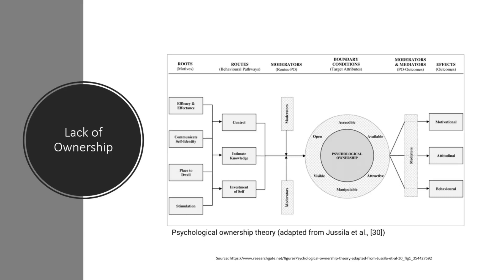The psychological principle of ownership says that your effectiveness and your ability to communicate your self-identity — those root motives create control. Your desire to be able to manipulate something so that you get a certain outcome, your identity that you put into something, that creates a sense of control. That's the behavioral trait in this psychological model.